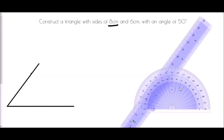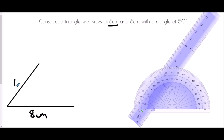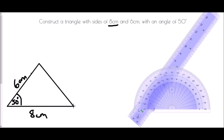Now that I've done that, I have created a diagram which matches the criteria — it has an 8 centimeter side, a 6 centimeter side, and an angle of 50 degrees. The only problem is it's currently not a triangle, so how do I solve that? Well, I quite simply join together the two ends of the triangle. It now is a triangle with a side of 8 centimeters and 6 centimeters and an angle of 50 degrees.